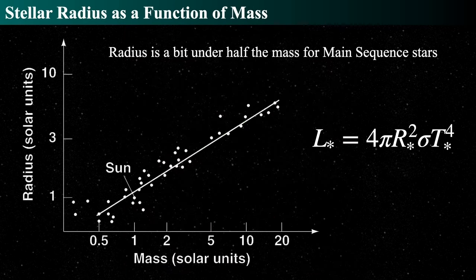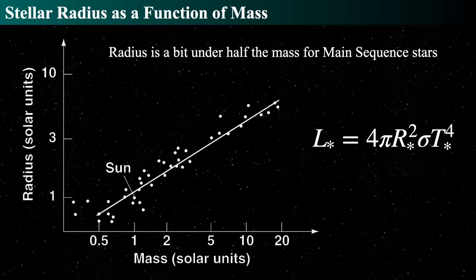Last time we talked about the radius of stars, demonstrating all the various radii from white dwarfs up to supergiant stars. For main sequence stars specifically, the radius doesn't vary a huge amount — from about 10% the radius of the sun for stars about half the mass of the sun, all the way up to only about 10 to 20 times the radius of the sun for very massive stars.